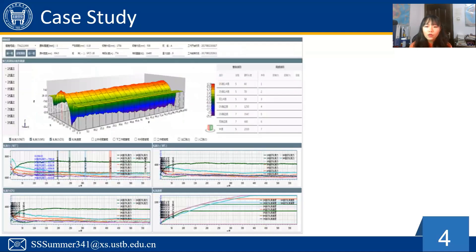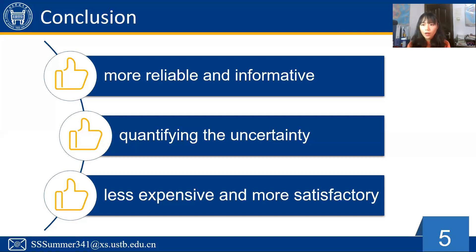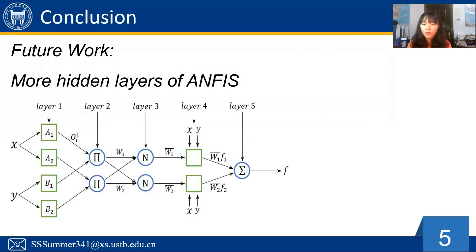Our model has been applied to a recent steel production process and achieved valid feedback. Therefore, the modified PSO-based ANFIS possesses the ability to generate narrow-width but higher coverage probability PIs in mechanical property forecasting. PI is a promising tool in mechanical property forecasting for its good quality of providing more reliable and informative outcomes and quantifying uncertainty. By adopting the modified PSO algorithm in constructing PIs and optimizing ANFIS models, the calculation is less expensive and the outcomes are more satisfactory. Candidate structures with more hidden layers of ANFIS will be studied in future work to improve the quality of PIs. If you have any questions, please post them in the issue section or contact me via email. Thank you.